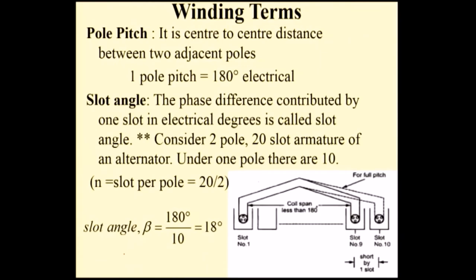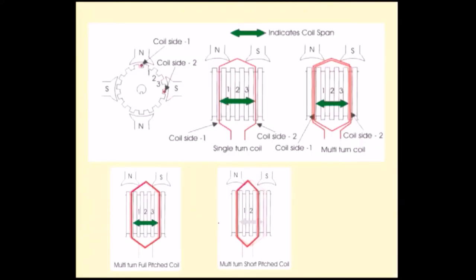Slot angle is the phase difference contributed by one slot in electrical degrees. Consider a 2-pole generator with 20 slots: slot per pole is 20 divided by 2, which equals 10. The slot angle formula is β = 180°/n, which gives 18 degrees in this case.